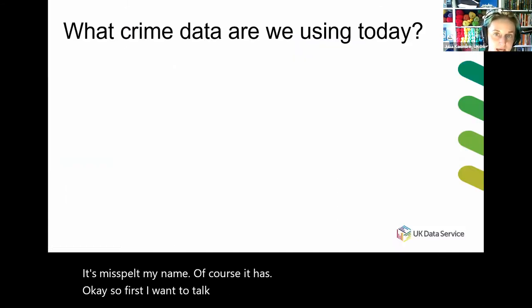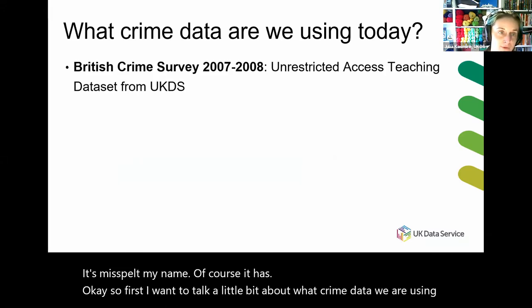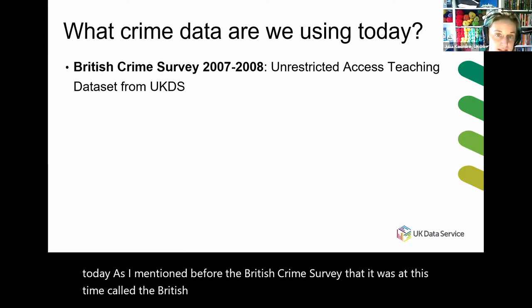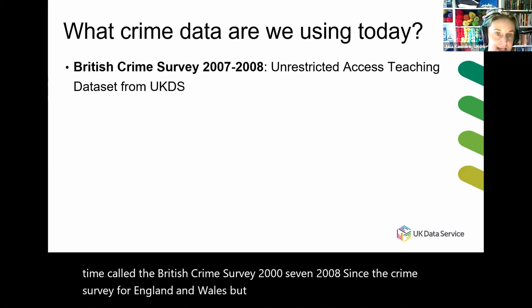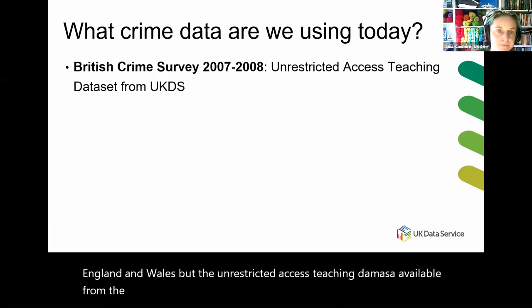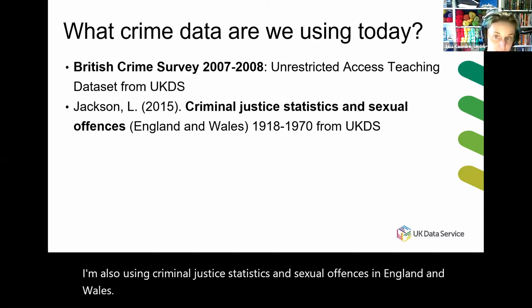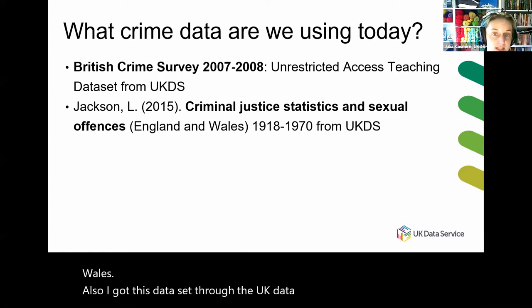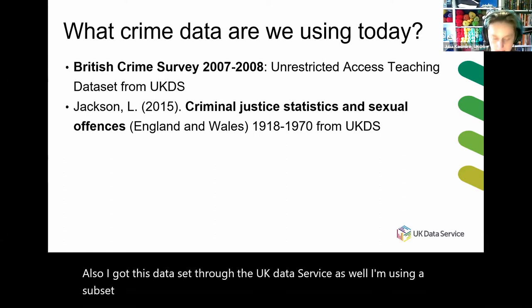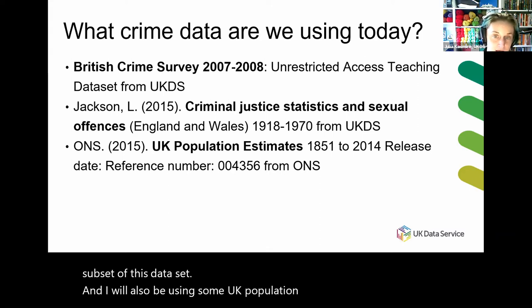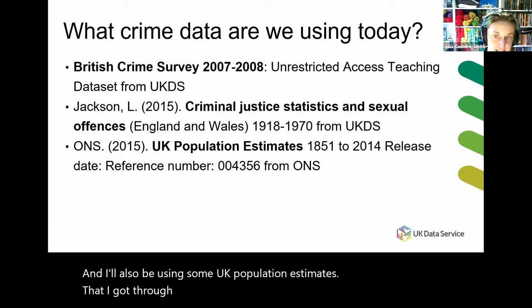First I want to talk a little bit about what crime data we are using today. As I mentioned before, the British Crime Survey — it was at this time called the British Crime Survey, 2007 and 2008, since renamed the Crime Survey for England and Wales — is the unrestricted access teaching dataset available from the UK Data Service. I'm also using criminal justice statistics and sexual offences, England and Wales. I got this data set through the UK Data Service as well. I'm using a subset of this dataset. I'll also be using some UK population estimates that I got through the Office for National Statistics, the ONS.